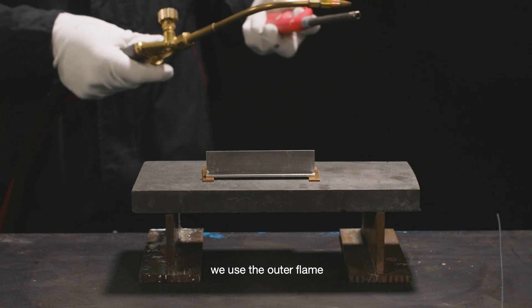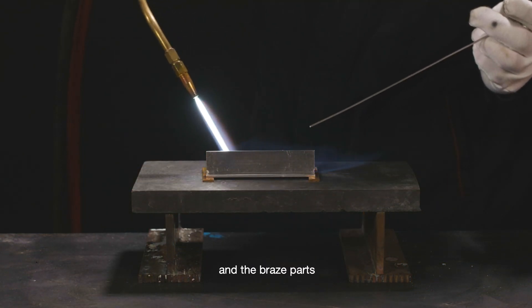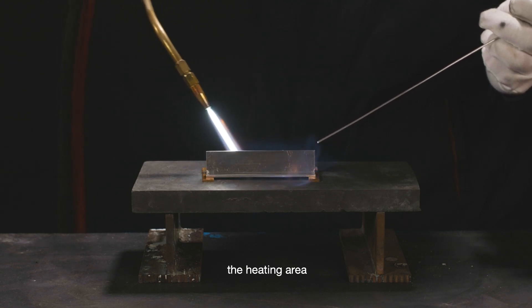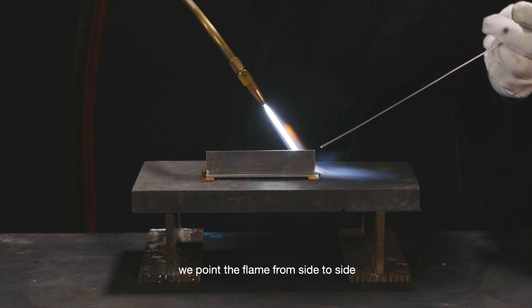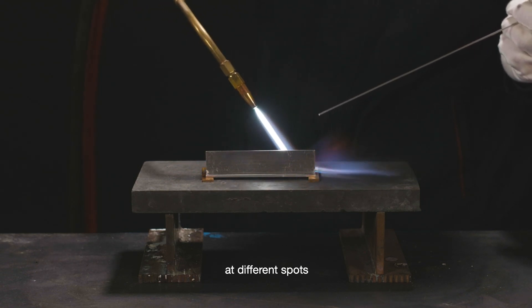We use the outer flame to preheat. A distance between the core of the flame and the braze parts needs to be maintained in order to maximize the heating area. We point the flame from side to side to prevent overheating and to make sure temperature is even at different spots.